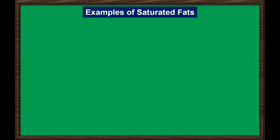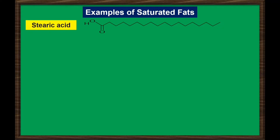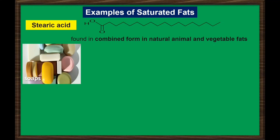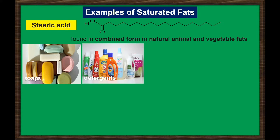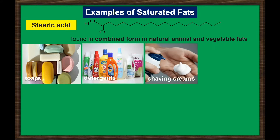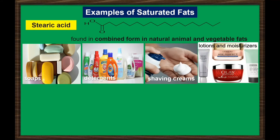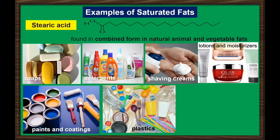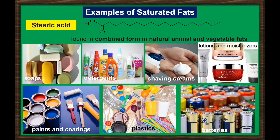Here are the most common saturated fatty acids in the human diet. Stearic acid consists of 18 carbon atoms and is one of the most common long-chain fatty acids found in combined form in natural, animal, and vegetable fats. Stearic acid daily uses include soaps, detergents, shaving creams, lotions and moisturizers, paints and coatings, plastics, batteries, and more.